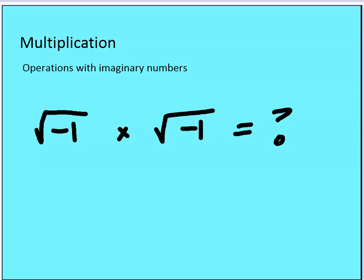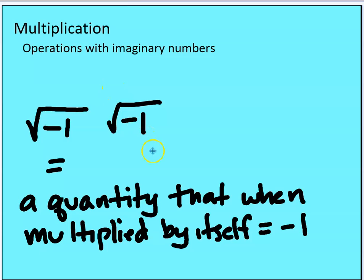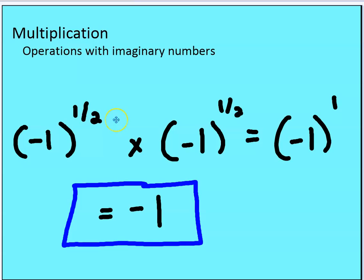Let's talk about multiplication — operations with imaginary numbers. The square root of negative one times the square root of negative one: what value do you think that is? The square root of negative one times the square root of negative one is negative one. So a quantity that when multiplied by itself is equal to negative one. You can also think of it this way using fractional exponents: negative one to the power of one half times negative one to the power of one half. You have the same base and you're multiplying, so you add the exponents — keeping the base negative one, you get negative one to the first, which is negative one.